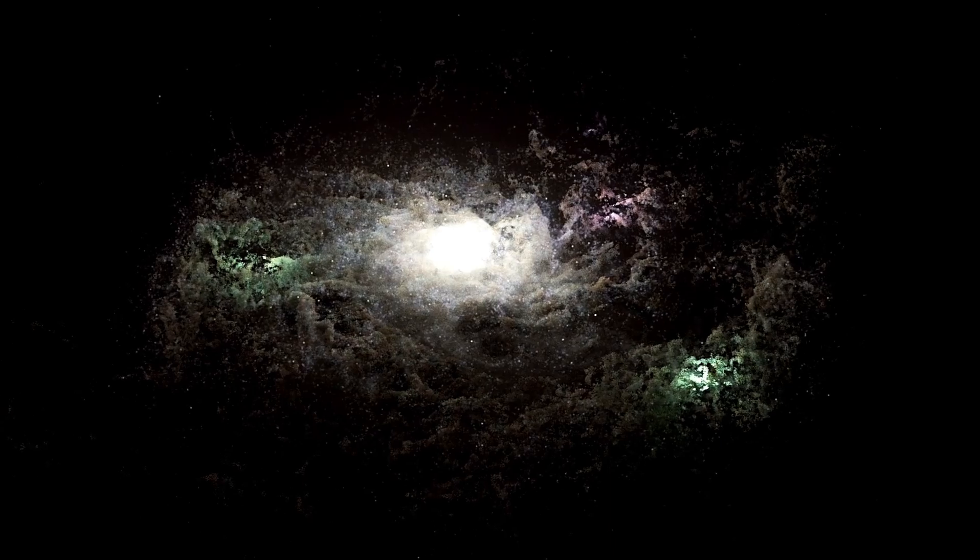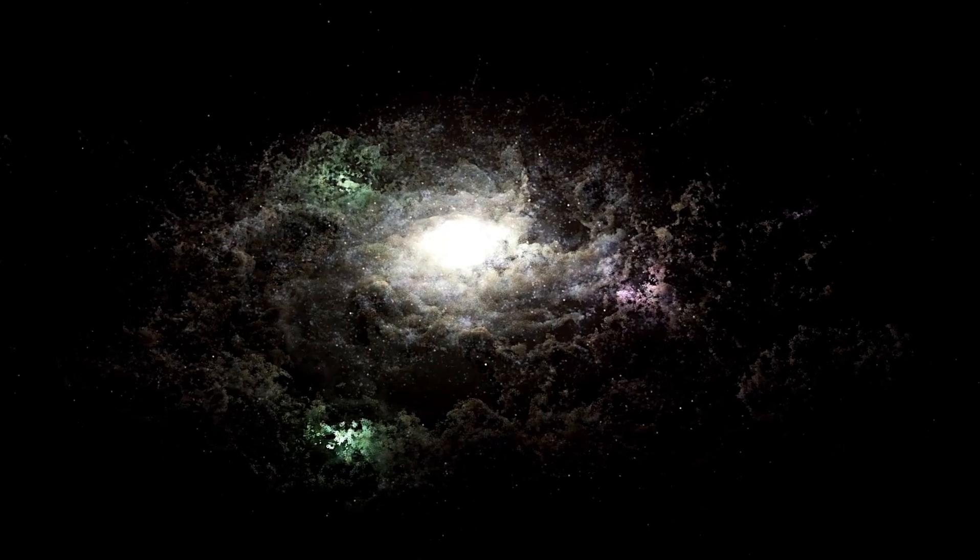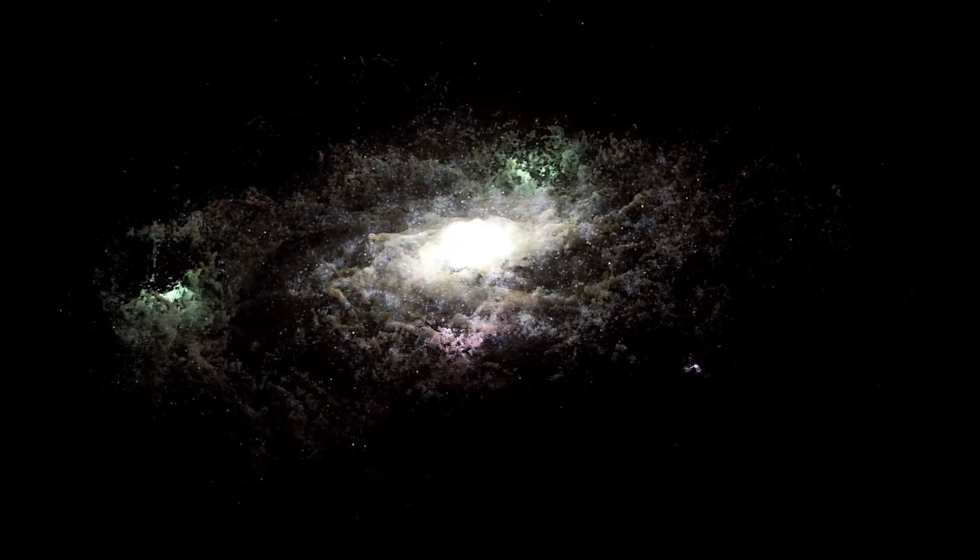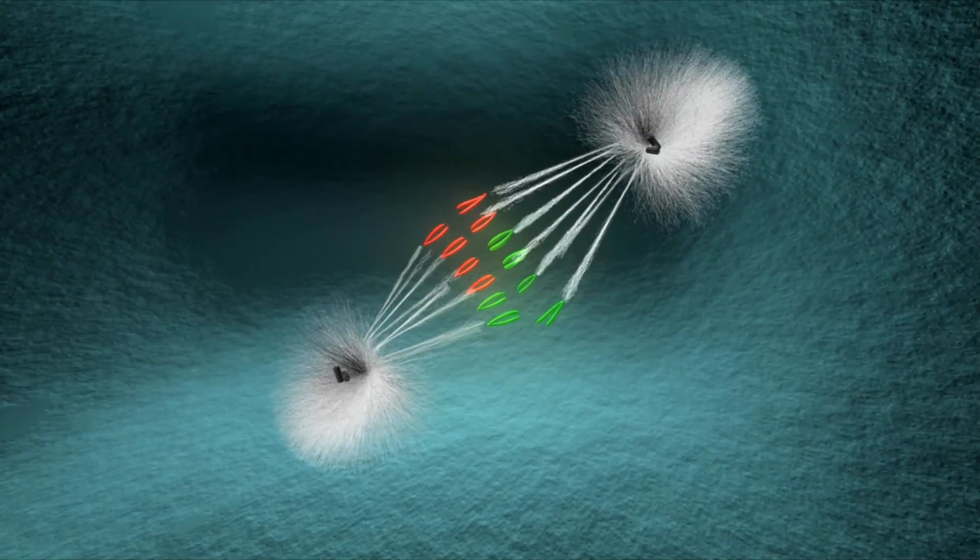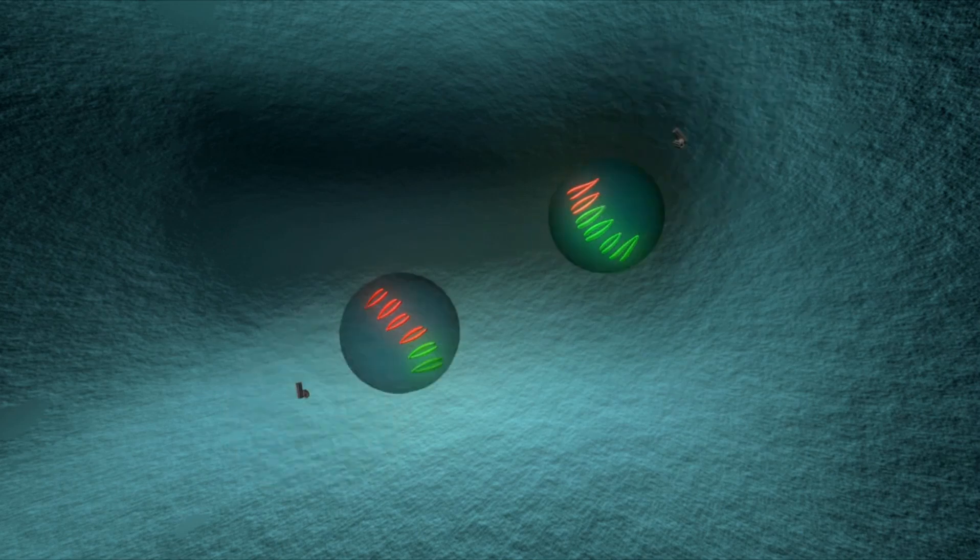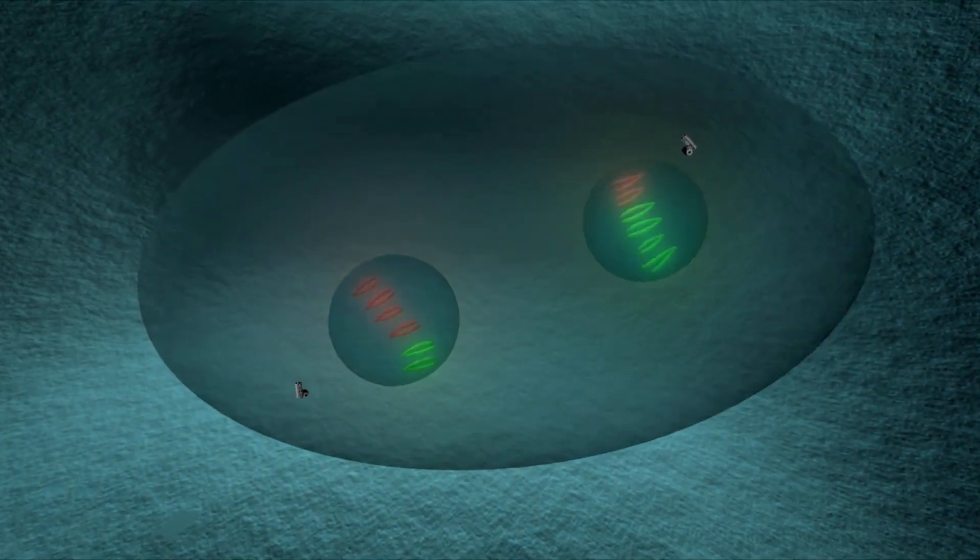This has led some theorists to revisit considerations of wormholes. If a black hole is somehow linked to another part of space-time, maybe even another universe via a wormhole, then it's possible that what Webb saw is the visible tip of a cosmic tunnel.